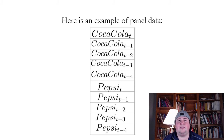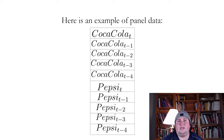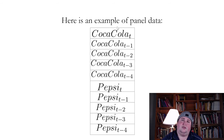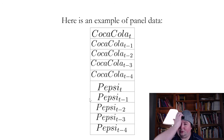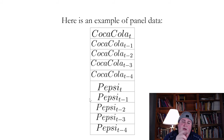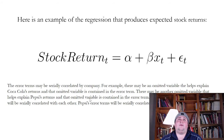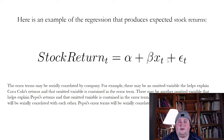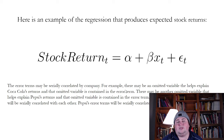So here's some example of panel data — we're looking at Coca-Cola's returns and Pepsi's returns. Why could the standard errors be serially correlated with each other over time or within a group? Here's an example of a regression that produces expected stock returns. This is basically the CAPM if XT is the market — the expected return of an asset correlated against the market. The error terms may be serially correlated by company, because there may be an omitted variable that helps explain Coca-Cola's returns and that omitted variable is contained in the error term.